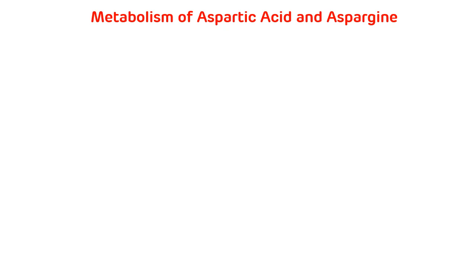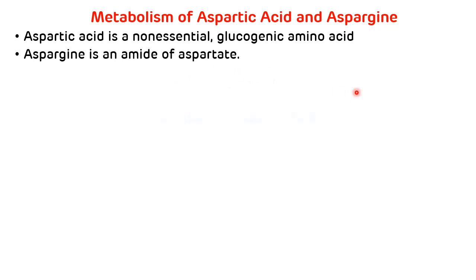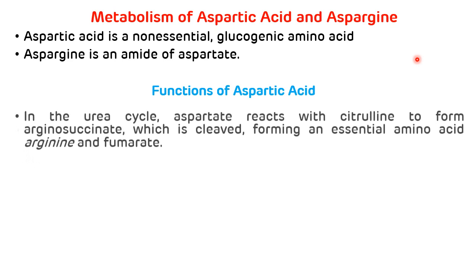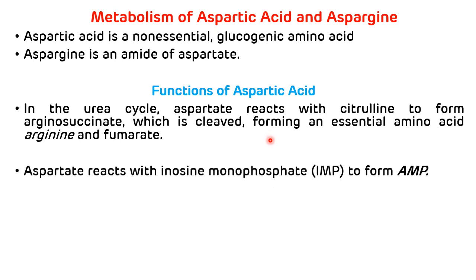Now, metabolism of another acidic amino acid, aspartic acid, along with asparagine. Aspartic acid is a non-essential and glucogenic amino acid, while asparagine is an amide of aspartate. The function of aspartic acid: in the urea cycle, it reacts with citrulline and forms argininosuccinate, which gets broken down to form arginine and fumarate. Second, aspartate reacts with inosine monophosphate (IMP) to form adenosine monophosphate (AMP).